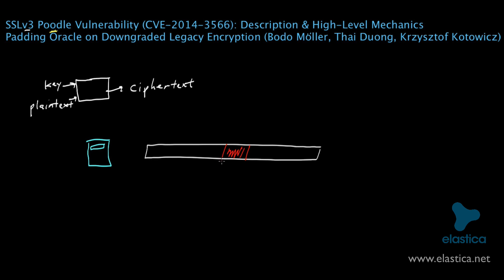In SSL v3, the first thing that's done as part of encrypting this data is to compute a message authentication code, or a MAC. Essentially, all this MAC does is serve as a type of cryptographic checksum for ensuring the integrity and the authenticity of that original data. The MAC can only be computed by parties who have access to the right cryptographic keys — in theory, the original sender and the recipient of the data.